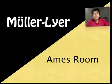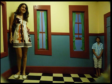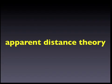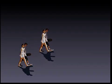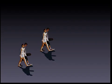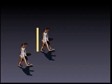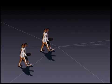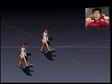The Ames Room illusion is based on the fact that we perceive the Ames Room as being rectangular in shape, when in reality it is a different shape. This is explained by the apparent distance theory, which states that when two images cast the same size on the retina, they are perceived as the same size unless one appears further away — in which case it will be interpreted as larger.